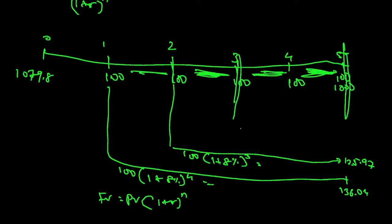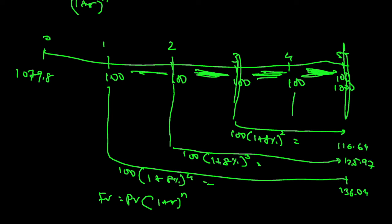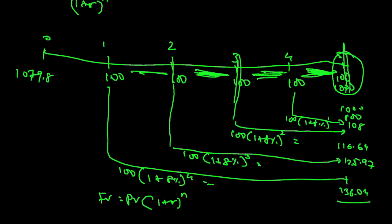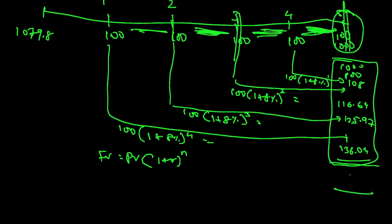The 100 received at year 4 grows for 1 period: 100 × (1.08)^1 = 108. At year 5, I receive 100 plus the principal 1000, taken as-is. Adding all these up — 136.04 + 125.97 + 116.64 + 108 + 1100 — the total future value I will reap at the end of 5 years, assuming I reinvest all coupon payments of 100 at 8%, comes to 1586.66.